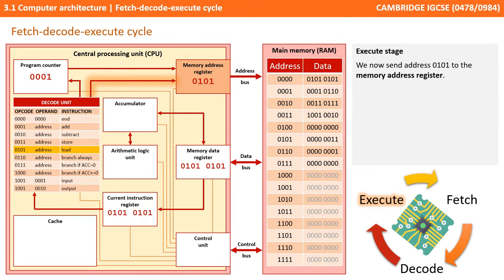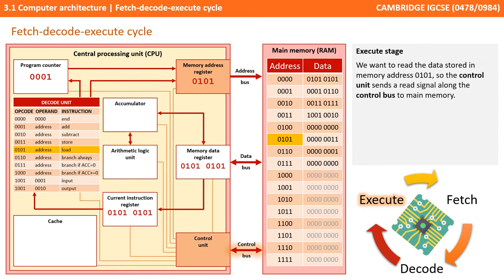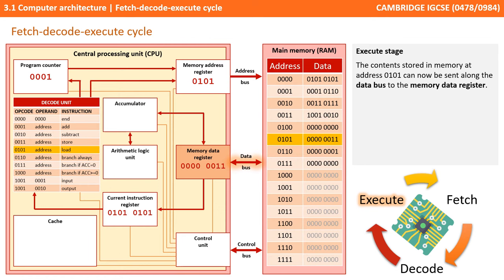Now we've fetched the instruction and decoded it, so we know what we need to do, and we're finally ready to execute it. We send address 0101 to the memory address register, and from there we send the address down the address bus to main memory. This time we want to read the data stored in memory, so the control unit again sends a read signal along the control bus. Main memory has now received an address and a read signal, so the contents stored at memory location 0101 can be sent along the data bus back to the CPU and into the memory data register.